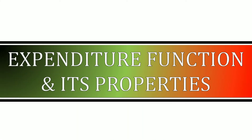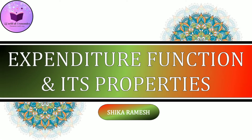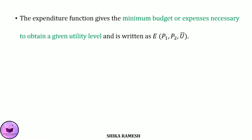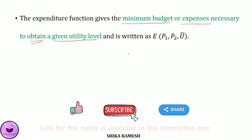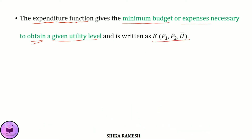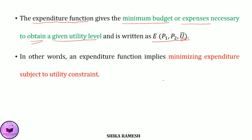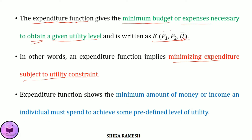Hello friends, this is the topic of expenditure function and its properties. The expenditure function is written as E of P1, P2, and U-bar. That is, the expenditure function is a function of the prices of two goods and a utility constraint. So, the expenditure function E(P1, P2, U-bar) represents the minimum expenditure required to achieve a given level of utility.